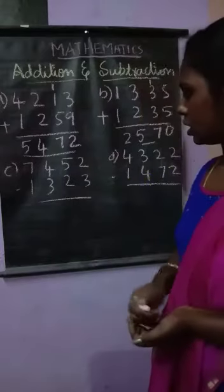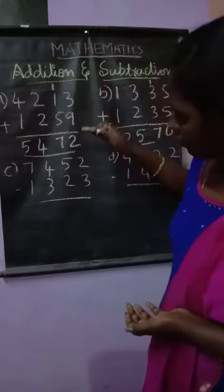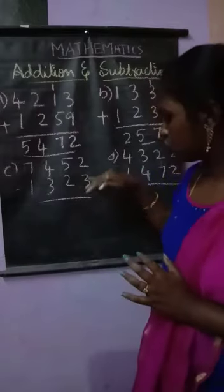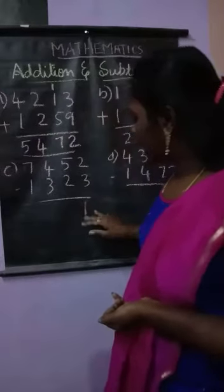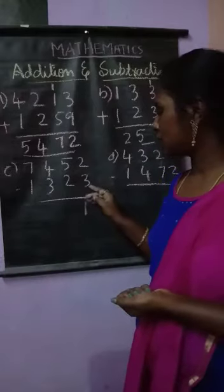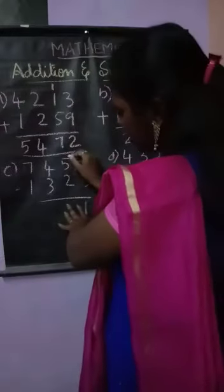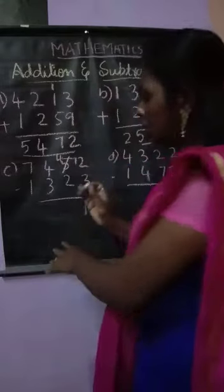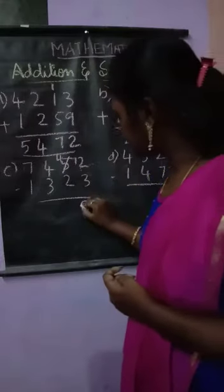Let us see how to subtract numbers. Here I have two numbers. Always we subtract the upper number minus the lower number. We must not reverse — doing 3 minus 2 would be wrong. I have to subtract 3 from the digit above. Since 2 is smaller than 3, we take a borrow of 1 from the next column — that column becomes 4, and 2 becomes 12. So 12 minus 3 is 9.